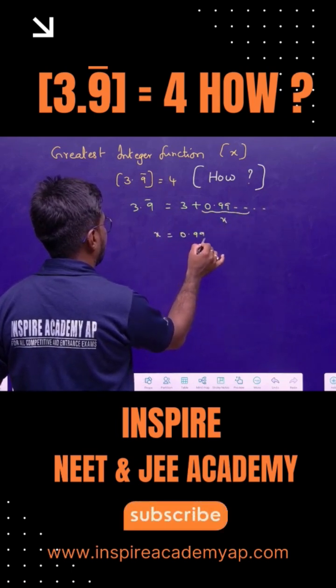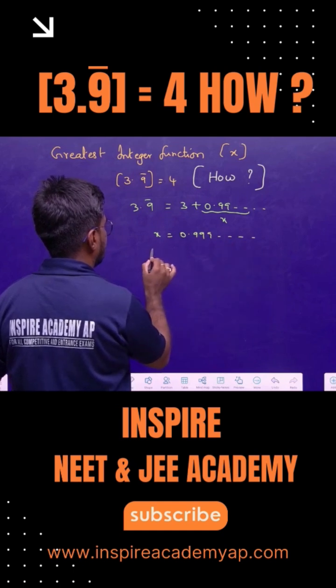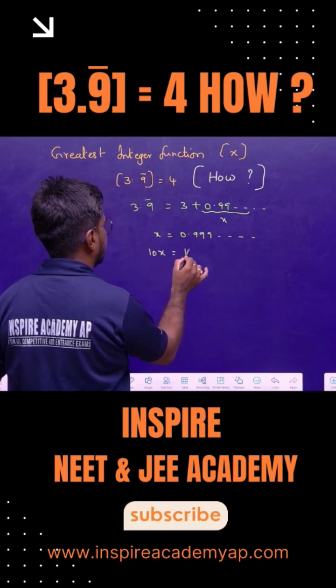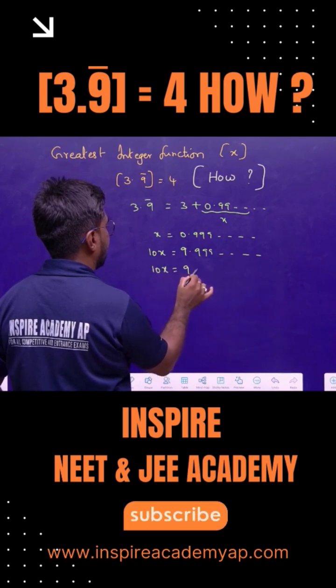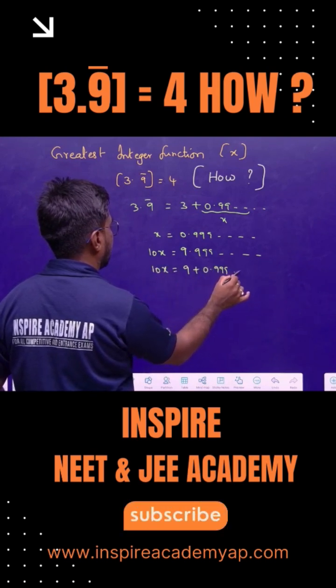x is equal to 0.999 repeating. I will multiply with 10 on both sides. It becomes 9.999 and so on. 10x is equal to 9 plus 0.9999. I can write like this.